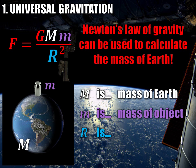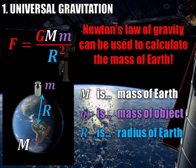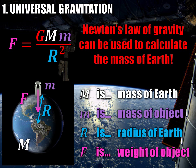Next, we have R, which represents the distance between the two masses. In this case, we have the Earth as the first mass and this 1 kg mass as the second mass, so R is simply the distance between them — in other words, the radius of the Earth. And lastly, we have F, which is the force of gravity, that attractive force acting between these two masses. This is called the weight.